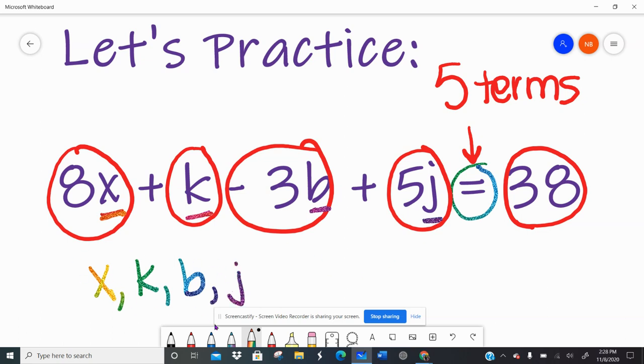And for every variable, I have to have a coefficient. So 8 is the coefficient. I have 1k. So 1 is the coefficient. I have negative 3 or minus 3b. And then I have plus 5, so a positive 5j. So 5 terms, 4 variables.